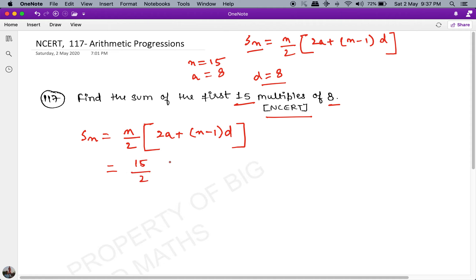This equals 15/2 multiplied by 2×8 + 14×8, which is 15/2 multiplied by 16 + 112, equals 15/2 × 128.